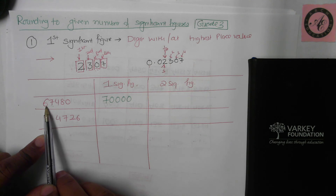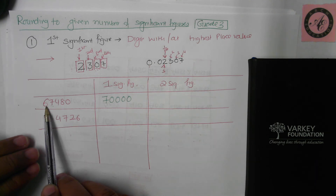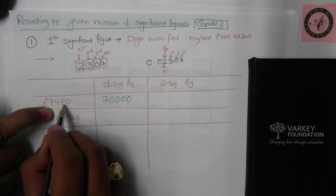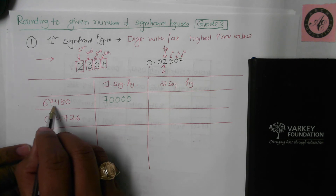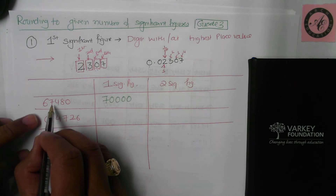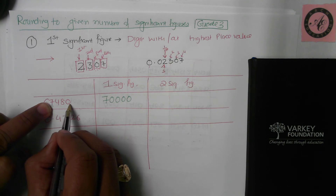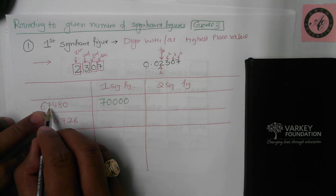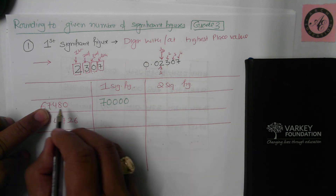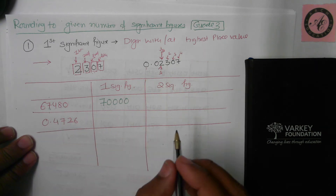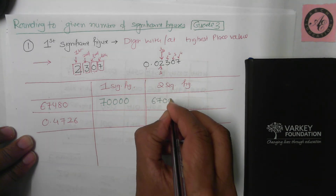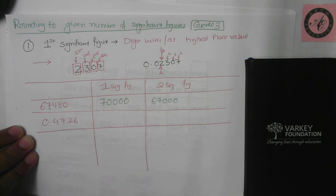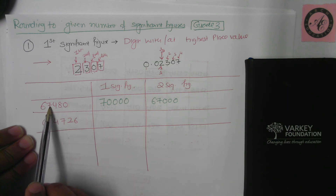For two significant figures, the second significant digit is seven, which sits at the thousands place. So we round 67,480 to the nearest thousand. Since 67,480 is closer to 67,000, the answer is 67,000.